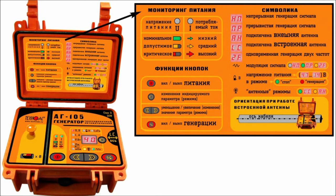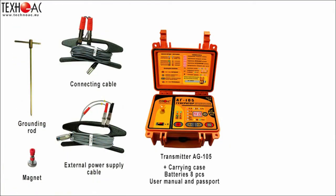For more detailed information, please see the legend on the transmitter's cover. The basic set of AG105 transmitter includes: the transmitter itself, and a connecting cable for connection to the grounding on one side and to the utility on the other.